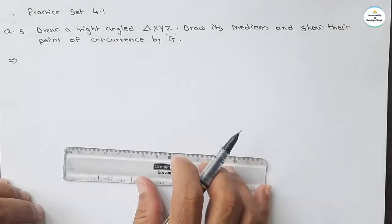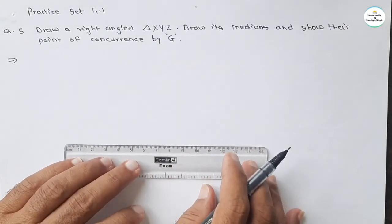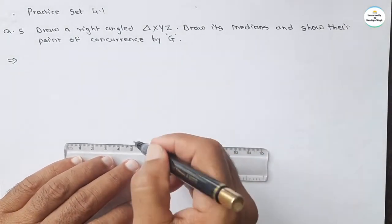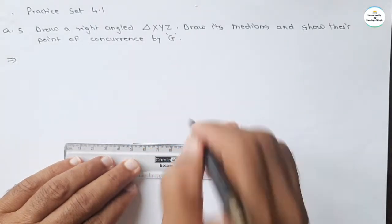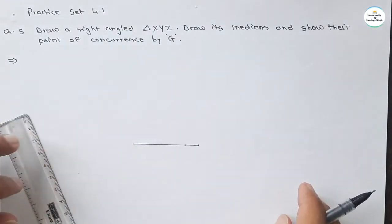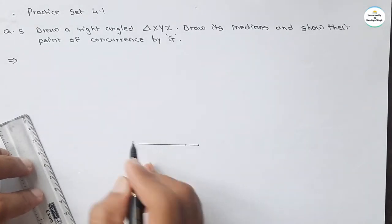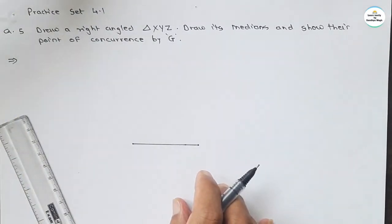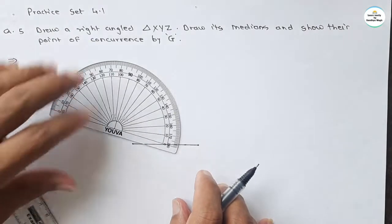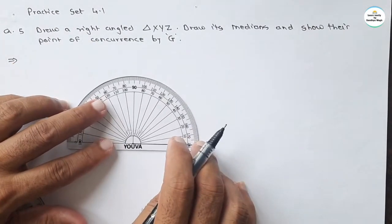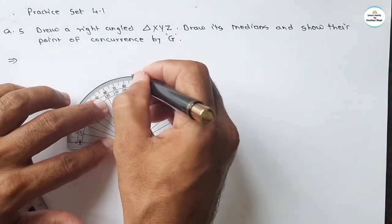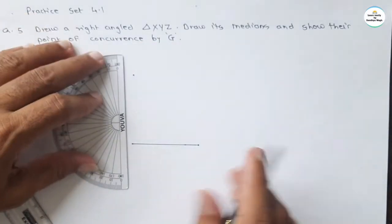Take a base of five centimeters. Then take the end and make a 90 degree angle. So just match this, take 90 degrees here.